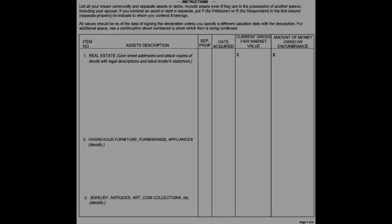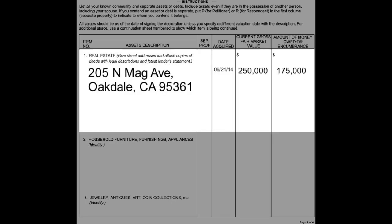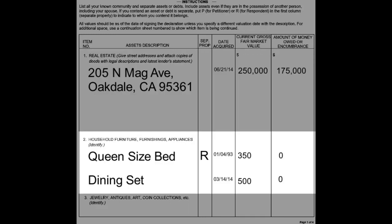I will give a couple of examples — your answers will be different from mine. Item 1, real estate: write street addresses and attach copies of deeds with legal descriptions and the latest lender's statement. Date acquired is when the property was purchased. The current gross fair market value is the value of the property as of the date of filling out this paperwork. The amount of money owed or encumbrance is the amount needed to pay off the rest of the property.